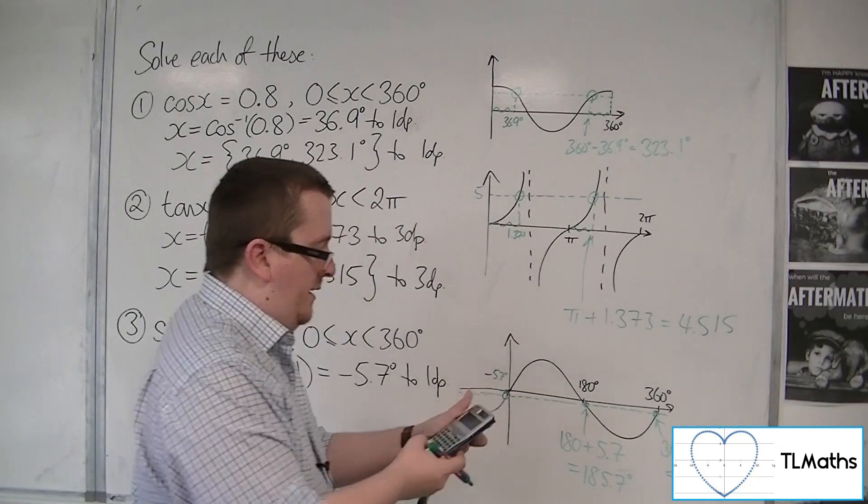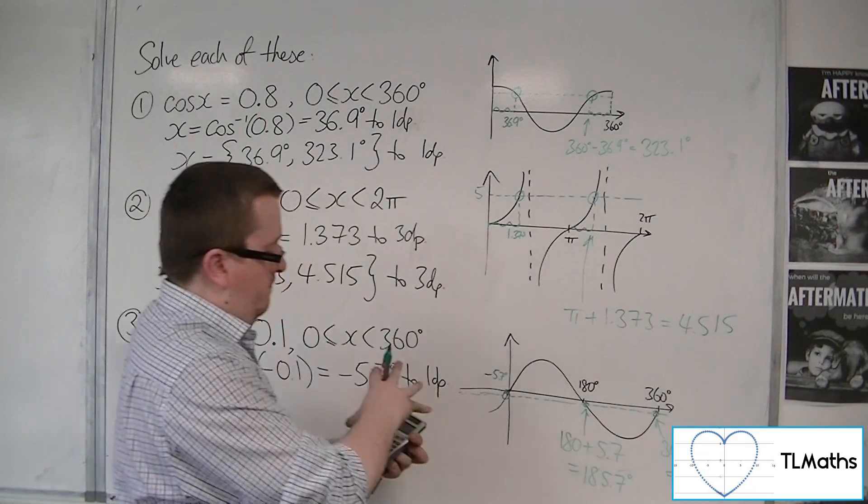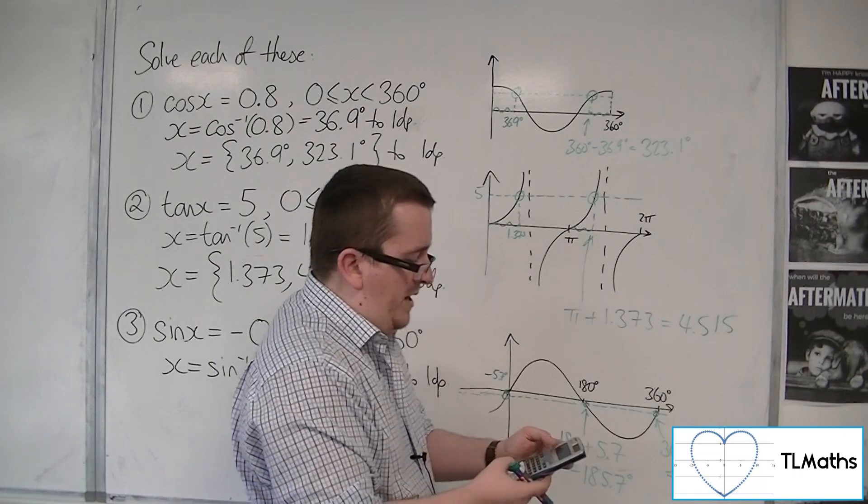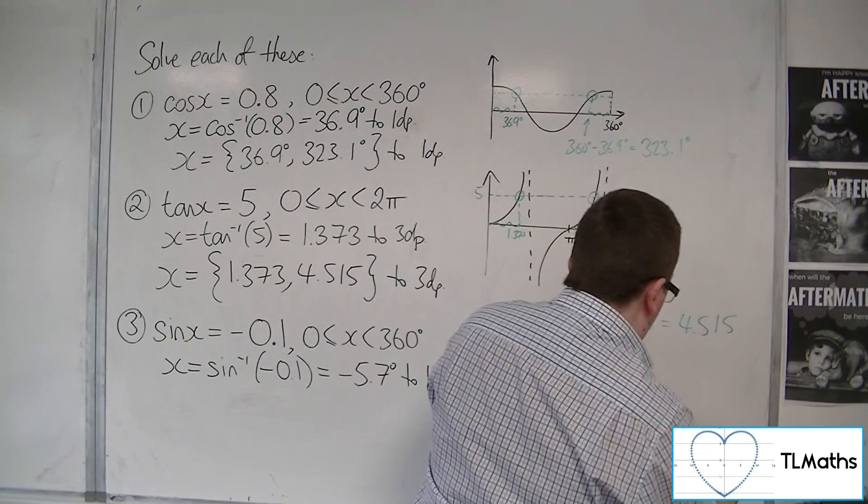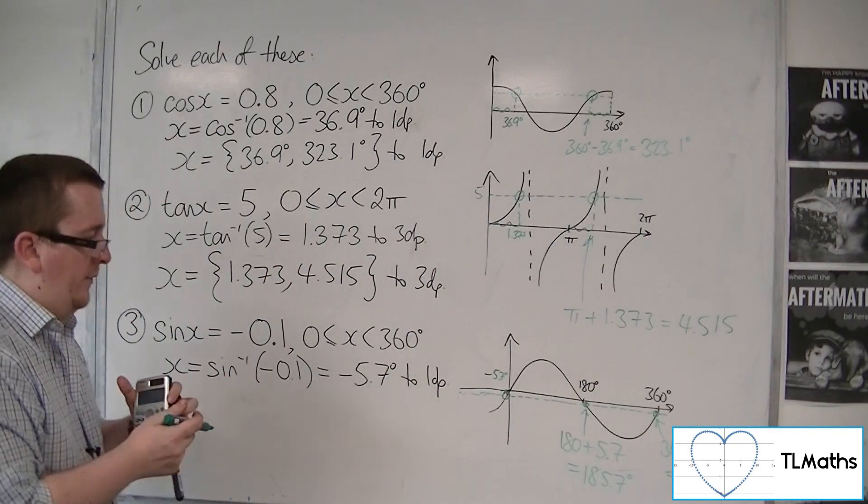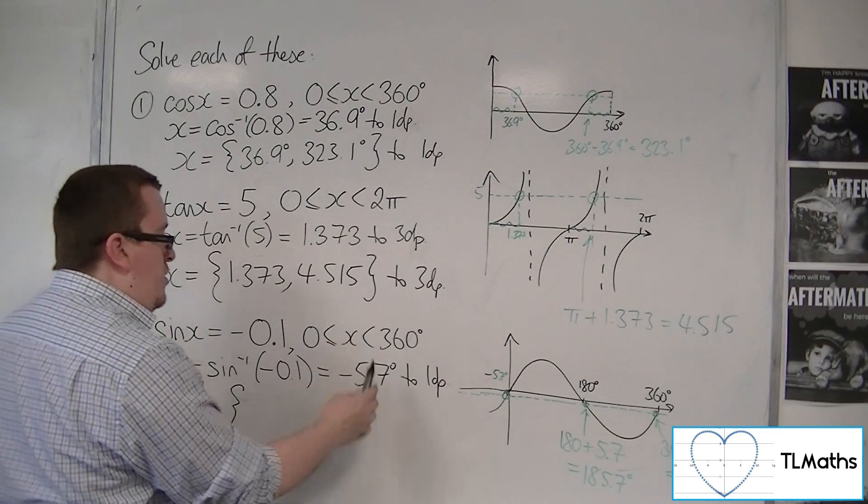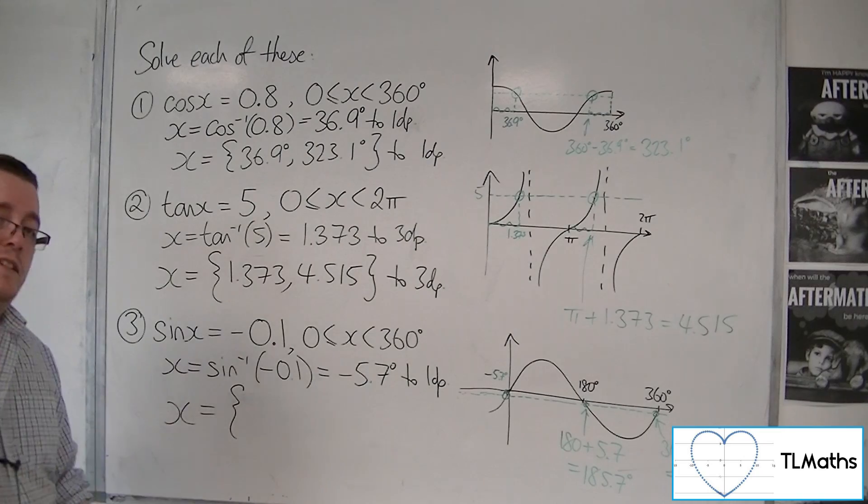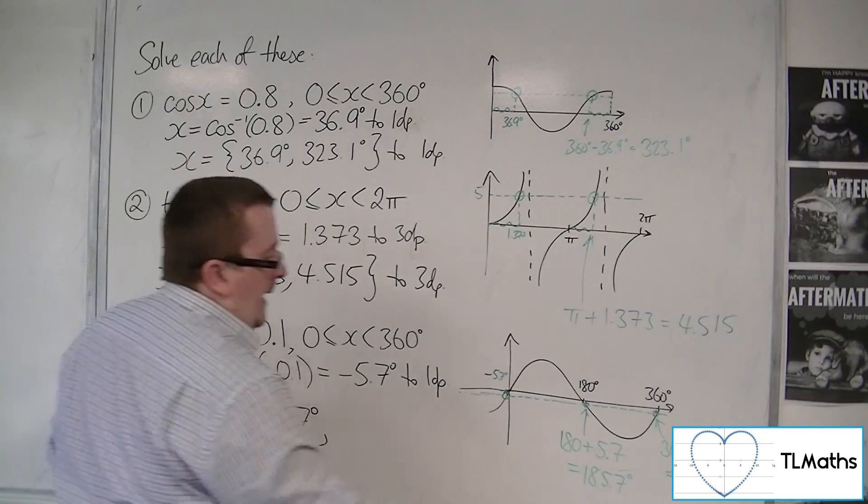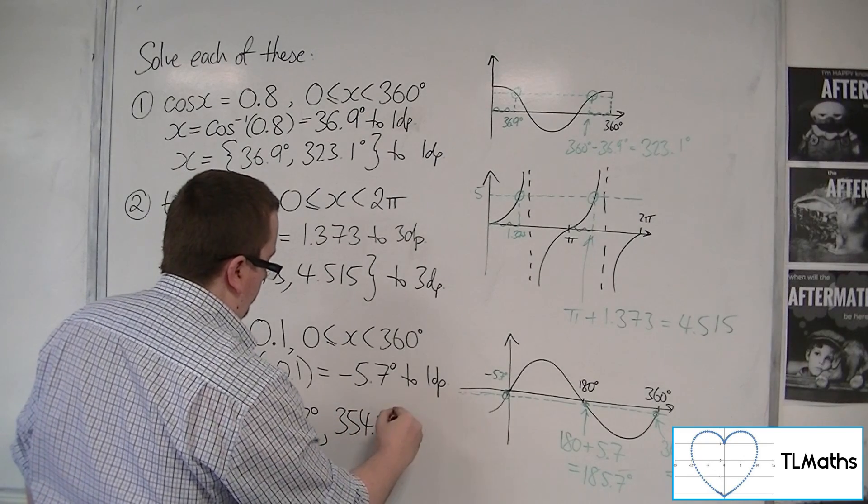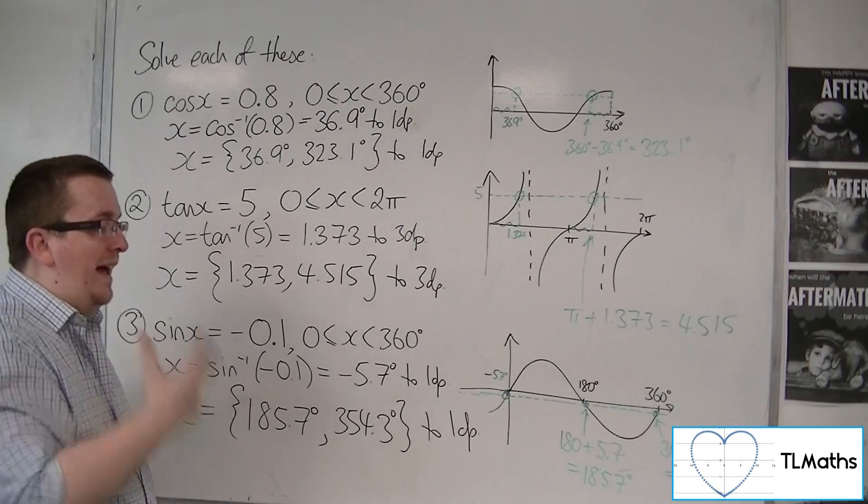I've kept that on my calculator. Got to be careful because my calculator is saying minus. I'm going to get rid of the minus by multiplying by -1, and then I'm going to do 360 take away the answer key, which gets me 354.3 degrees to one decimal place. So our two solutions: x equals 185.7 and 354.3. Not that one, it's not between 0 and 360, so we can't include it as a solution. So be careful, don't include solutions that are outside the range.